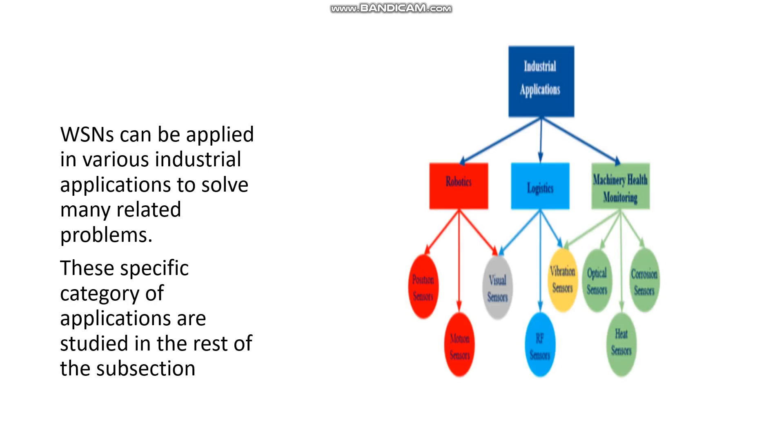The application I'm going to discuss in detail is about industrialization. As we know, we are in lockdown and working from home, so I'll discuss how we can use wireless sensor networks for regular transportation and operations to work normally and smoothly without human involvement. I'll classify this industrial application into three areas: robotics, logistics, and machinery health monitoring, which I'll cover one by one.